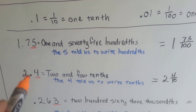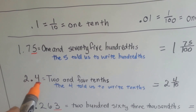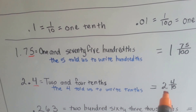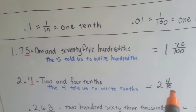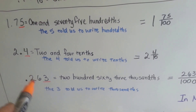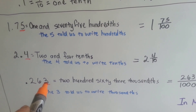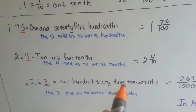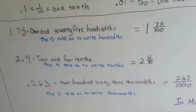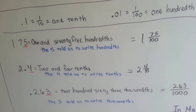This one is two-point-four, or two and four-tenths. The four told us to write tenths because it's in the tenths place. As a fraction, it would be two with a four over a ten. And then this one is point-two-six-three. The three tells us to write thousandths — it's two hundred sixty-three thousandths. We don't say 'and' because there's no whole number in front of it. As a fraction, it would be 263 over 1,000.